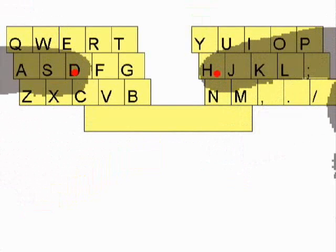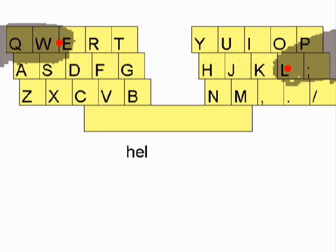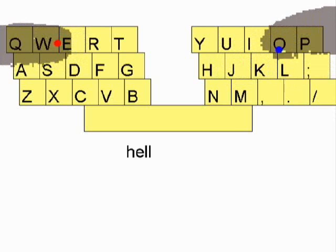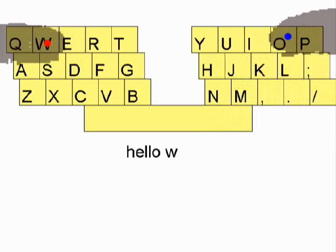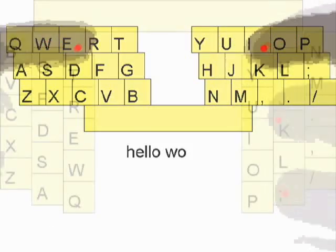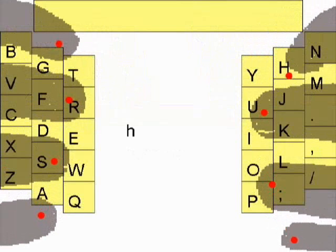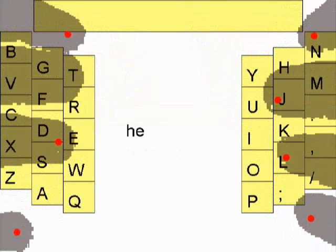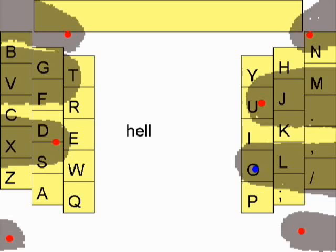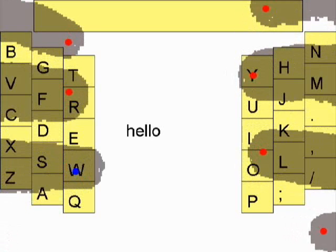Next, we examined text entry. A traditional soft keyboard can be used with two touch points. Because this does not leverage the other fingers, however, input is slow. To utilize additional fingers, we modified the keyboard so that the relative positions of the keys and fingers would be maintained for touch typists. This layout allows more fingers to reach the keys while leveraging previous learning.